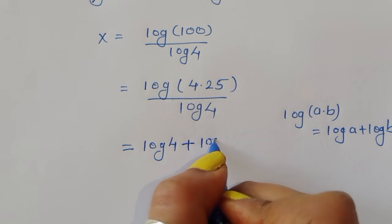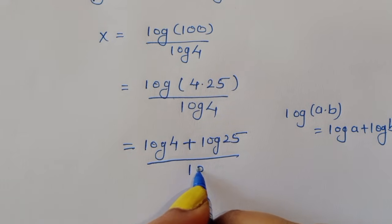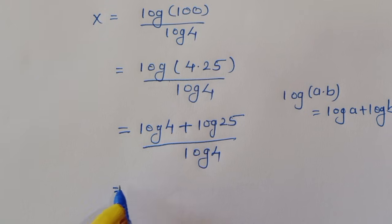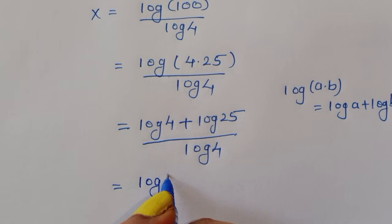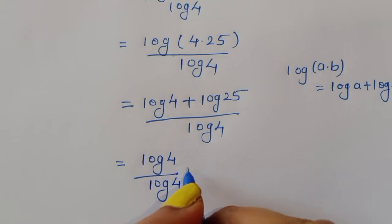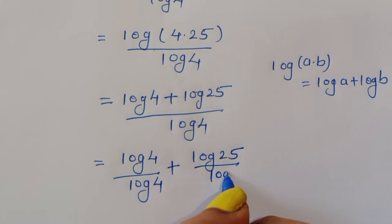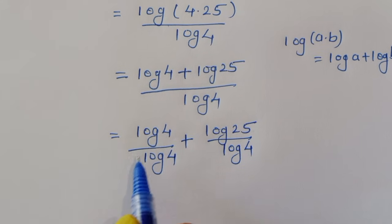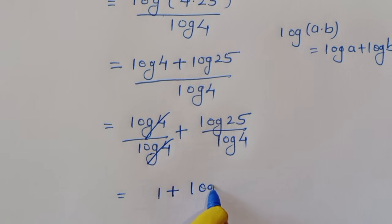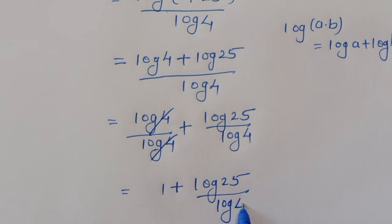We can separate this term: log of 4 divided by log of 4 plus log of 25 divided by log of 4. Now log of 4 divided by log of 4 cancels to 1, giving us 1 plus log of 25 divided by log of 4.